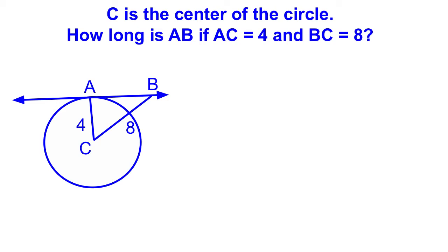If you look at our diagram, this is a tangent line going across here. We have a tangent line and we also have a radius AC. That means angle A is a 90-degree angle. Since angle A is a 90-degree angle, we can use the Pythagorean theorem to solve.